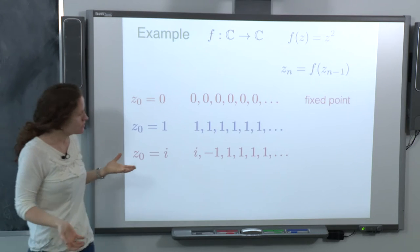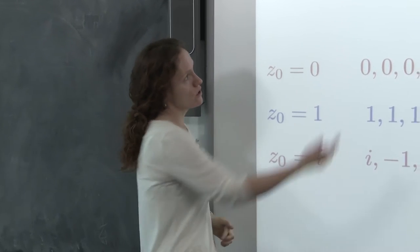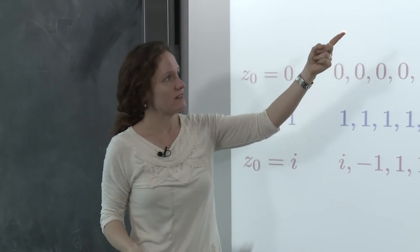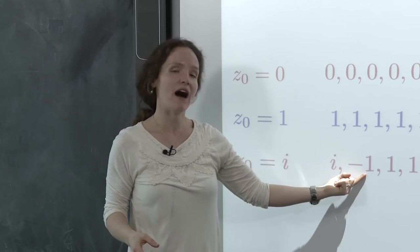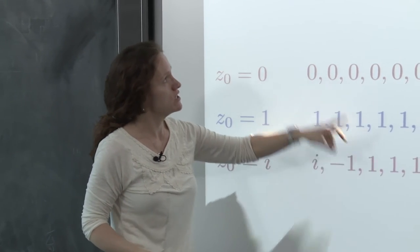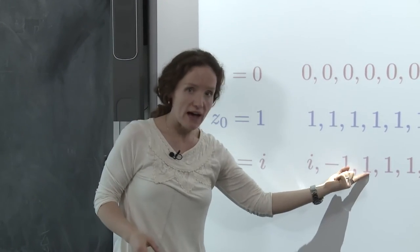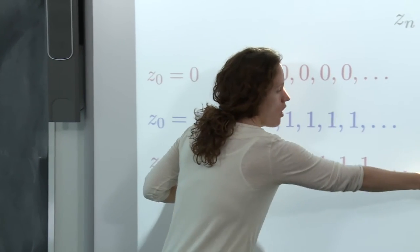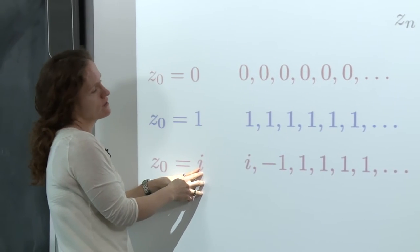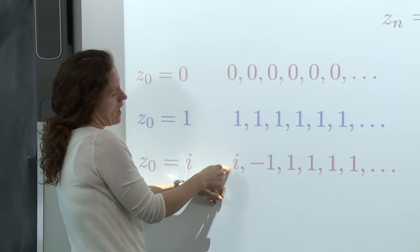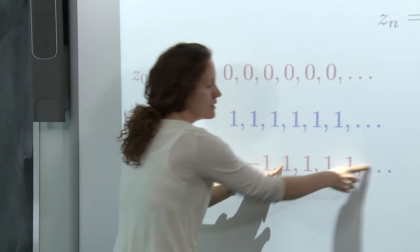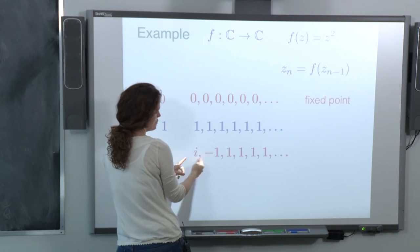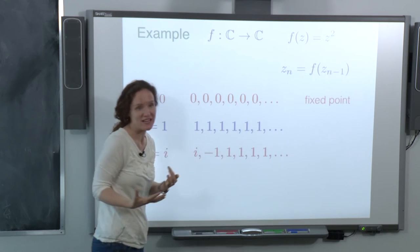Things get more interesting with other numbers. Since we're working with complex numbers, take i. Plugging i into the function gives i squared, which is minus 1. Then squaring minus 1 gives 1. So if you start at i, you eventually get a sequence of all 1s. The point i is not a fixed point, but after just two steps the sequence becomes constant and boring again.